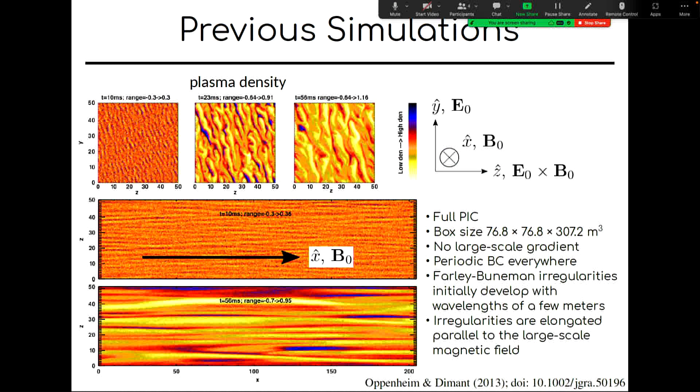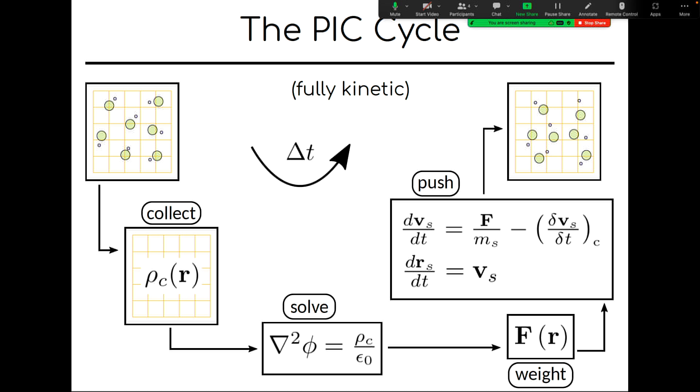So let me summarize a bit of the PIC cycle, the particle and cell cycle. The talks this morning did a great job of covering a lot of this. So I'm going to refresh your memory, normalize a little bit, and also point out where our simulations differ. So we set up the particles, and we collect them all into a charge density. This is relevant for the fully kinetic PIC simulation. And then we solve Poisson's equation from that charge density, and then we weight that, convert that to a force, and then we use that force to move the particles around subject to collisions, which is the other term in the dV/dt equation, and then we repeat over and over. So that's the standard form for our fully kinetic PIC codes.